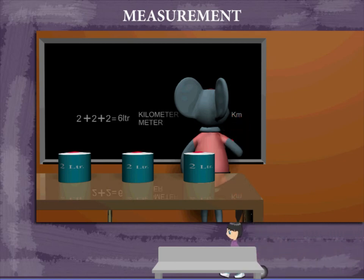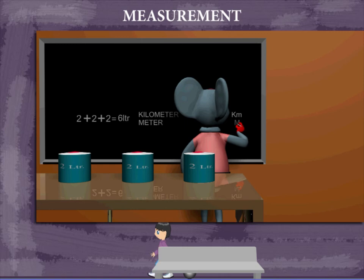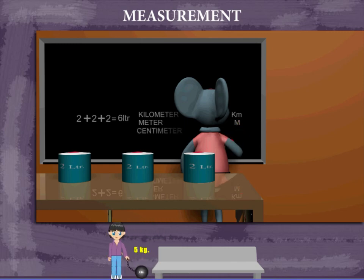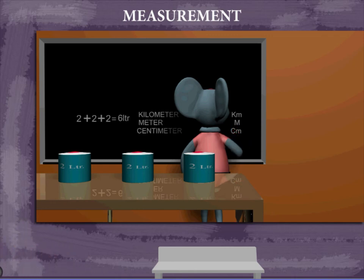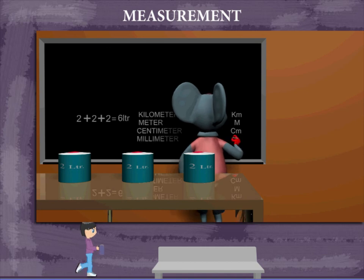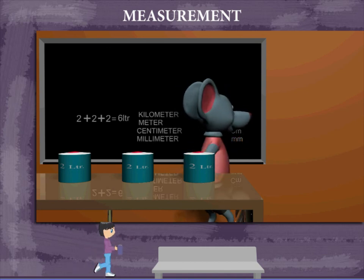Distances are measured in kilometers, written as km, or meters, written as m. Smaller distances are measured in centimeters, written as cm, or even smaller distances in millimeters, written as mm.